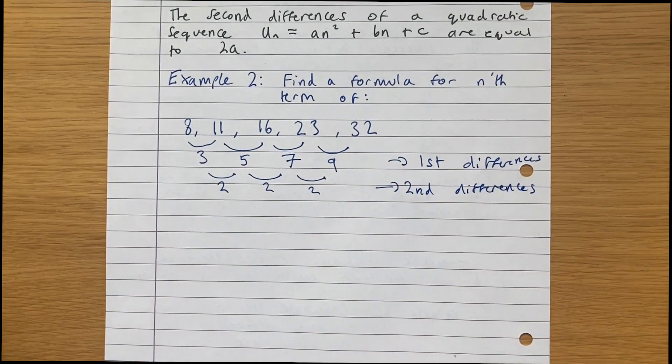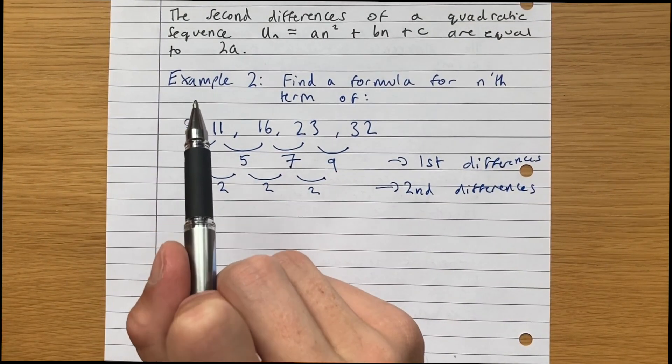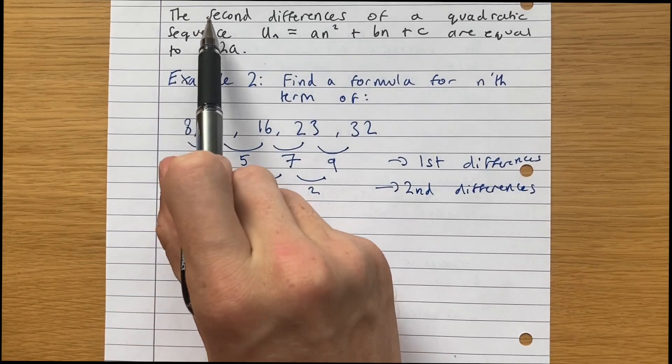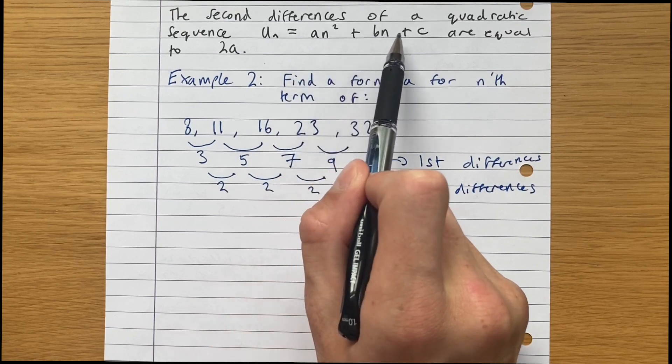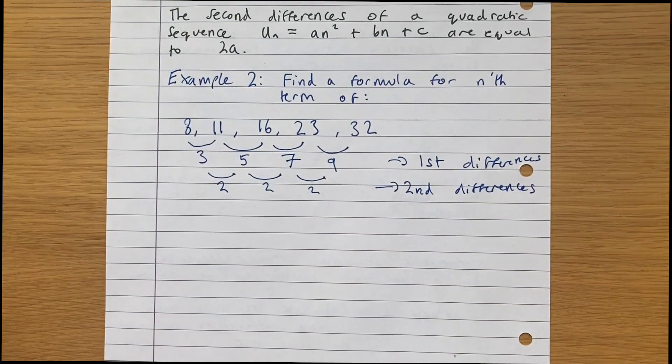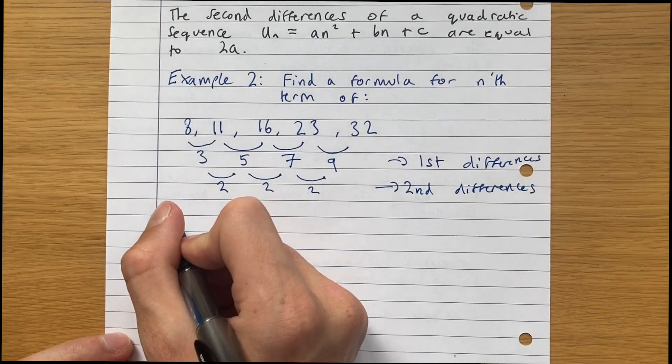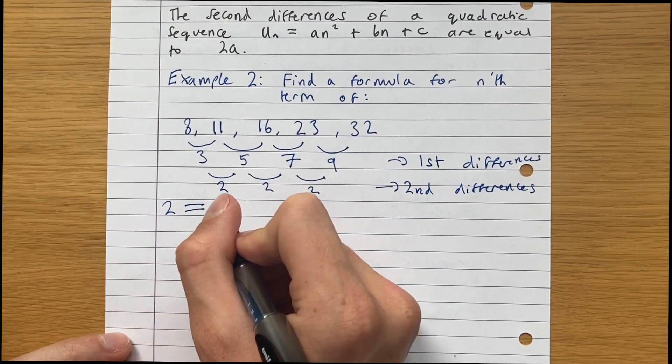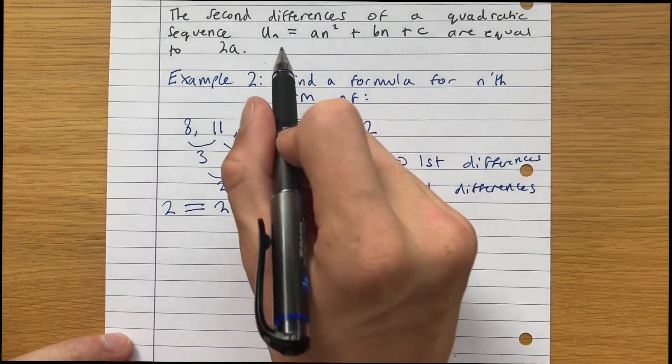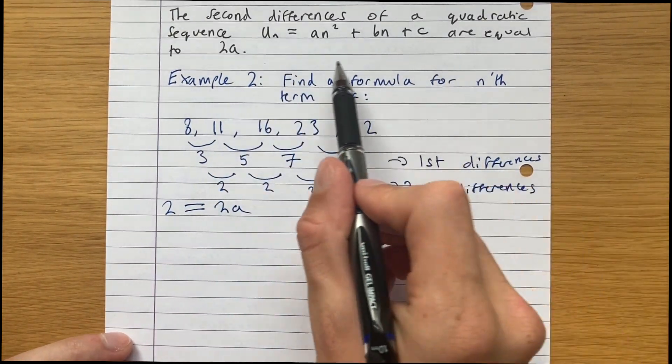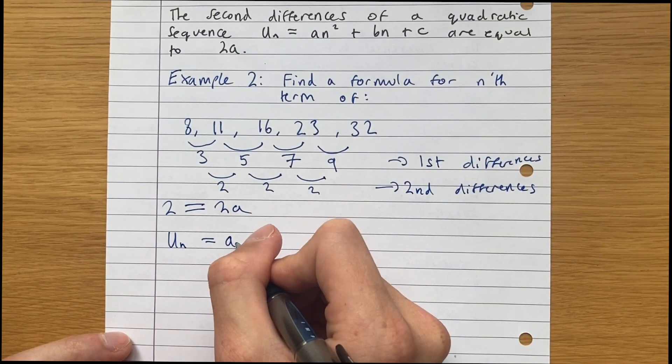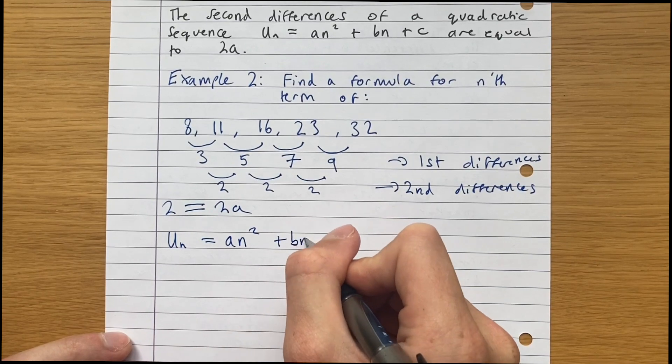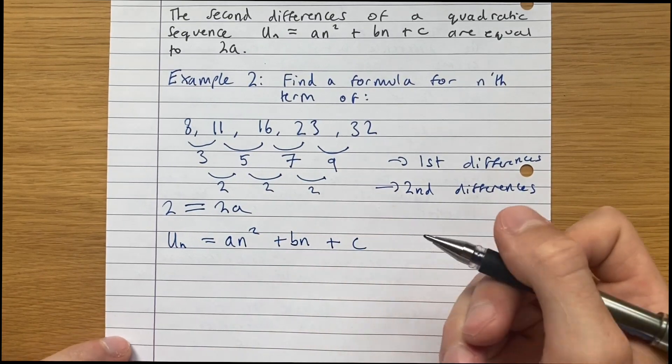So this is where what I've written above comes into play. The second differences of a quadratic sequence, un equals an squared plus bn plus c. In other words, 2 is equal to 2a in our sequence. So we're trying to find the formula for the nth term. We know it's going to be of the form un equals an squared plus bn plus c.